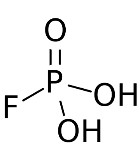Fluorophosphoric acid is produced by treating phosphorus pentoxide with hydrogen fluoride. It can also be prepared by hydrolysis of phosphorus oxyfluoride.